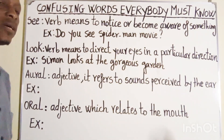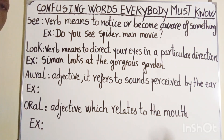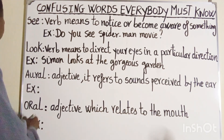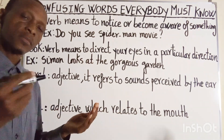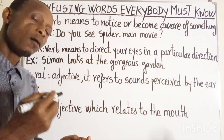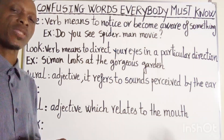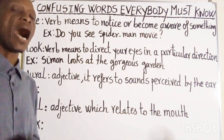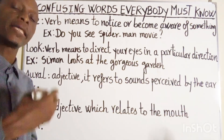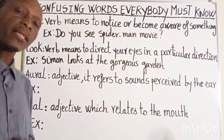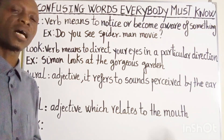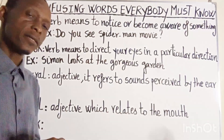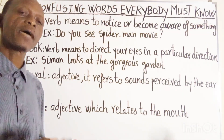Now let's study 'aural' when spelled A-U-R-A-L and 'oral' when spelled O-R-A-L. They are most likely confused because they are homophones. While these two words are related to each other, they are not interchangeable, and the main difference between them is about hearing and speaking. Now let's study them one by one.